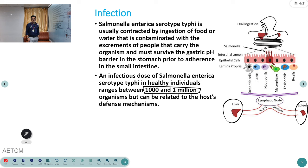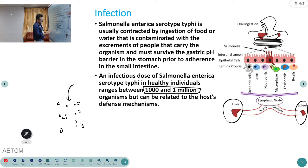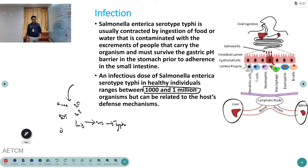Whether typhoid develops depends on the host defense mechanism. Someone who regularly consumes contaminated food builds antibodies against the bacteria, which can neutralize it before it enters the circulation. If the patient has not been exposed to this bacteria previously, they develop typhoid — it all depends on the patient's immune mechanism.